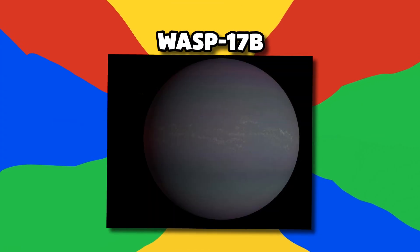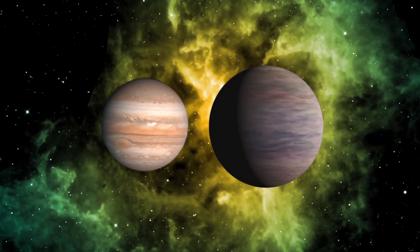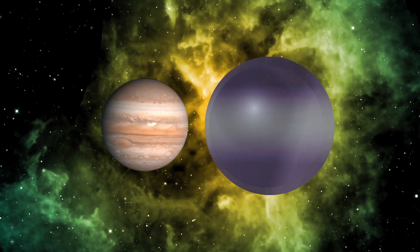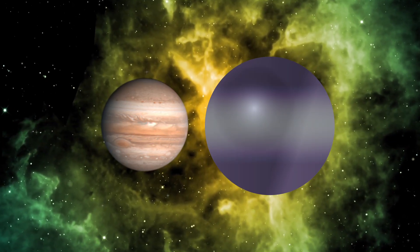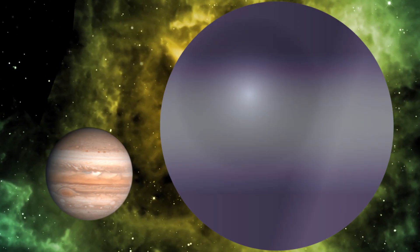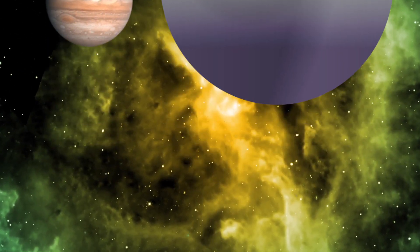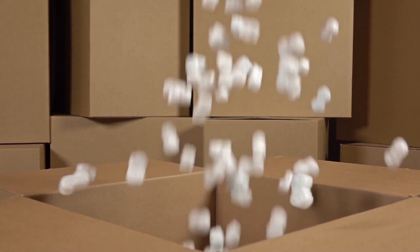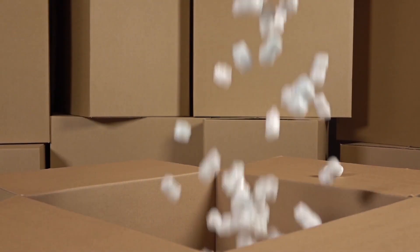Number 4, Wasp 17b. Just like HAT-P1b, the exoplanet Wasp 17b belongs to a category called Puffy Planets, due to it being 19 times the size of Jupiter, but having only half of its mass. That would make it similar in density to polystyrene. But that's not the only thing that makes it unusual.